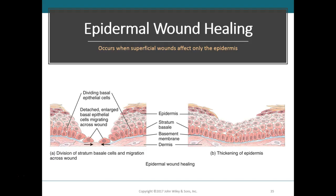In epidermal wound healing, an injury has occurred and the wound may extend down to the dermis, but really only the epidermis is damaged. The basal cells in the stratum basale detach from the basement membrane below, or if the basement membrane has been damaged they detach from the surrounding tissues. As they do so, they start migrating or moving in toward each other to close that injured area.